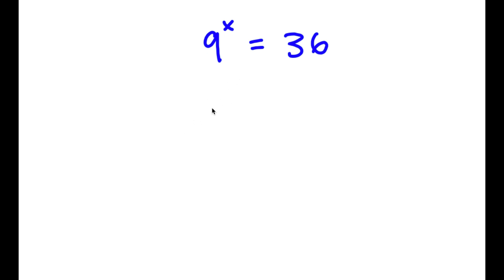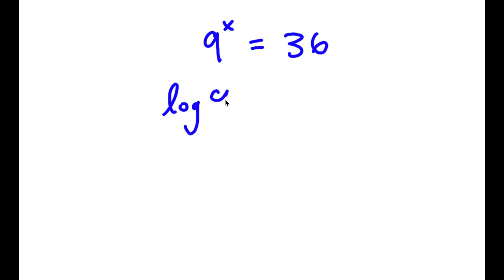In this problem, I have 9 to the power of x is equal to 36. So what I'm first going to do is take the log on both sides. So I have log of 9 to the power of x is equal to log 36.